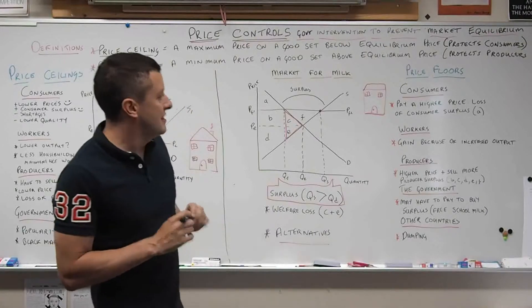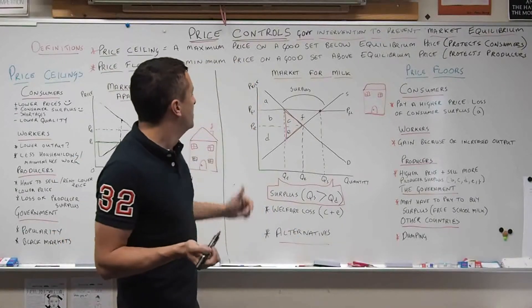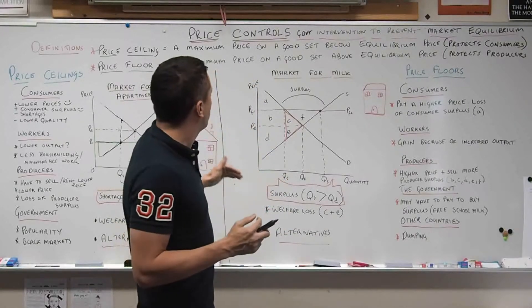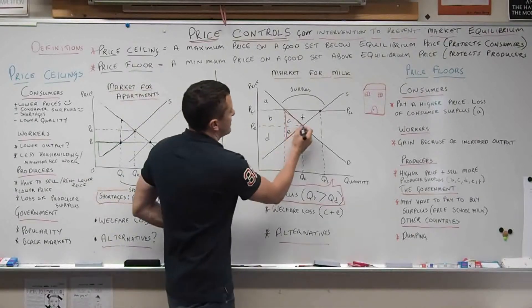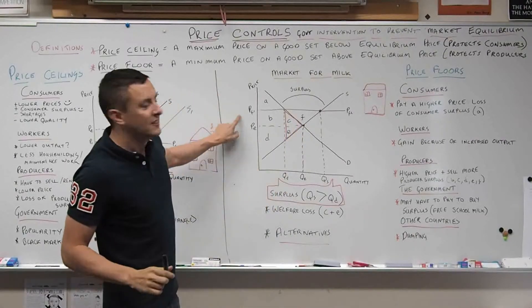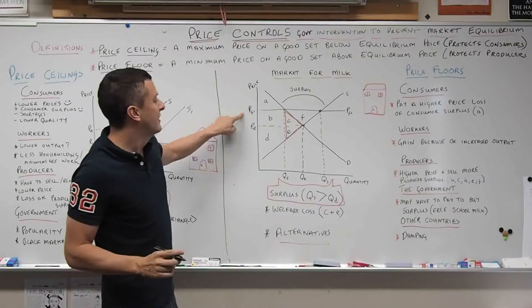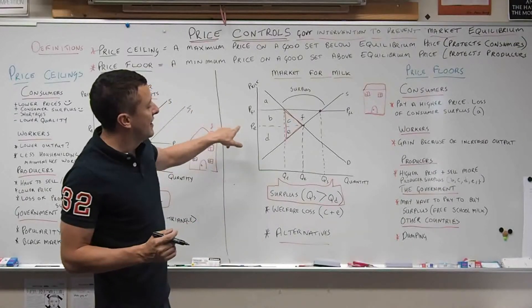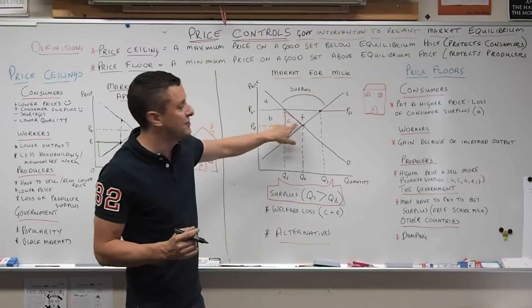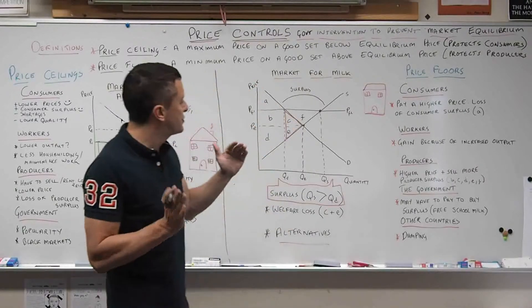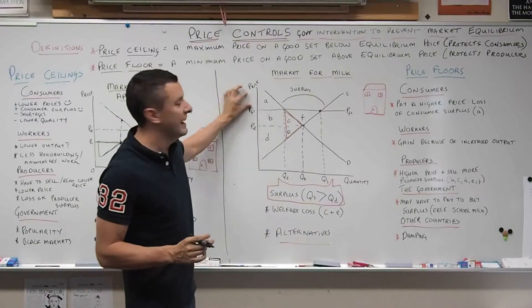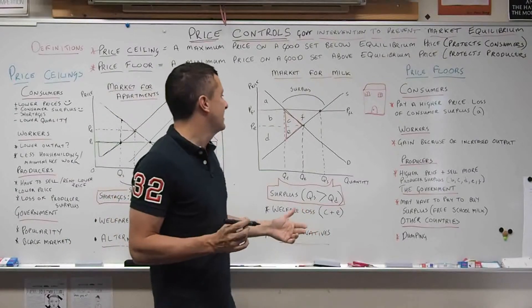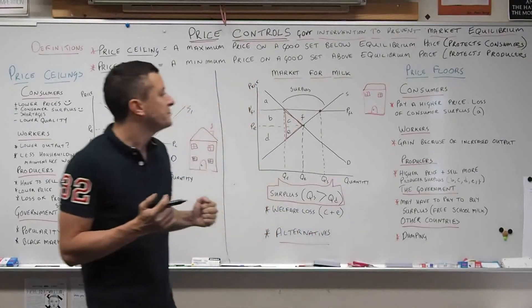So what are the effects on the different groups? Let's think about consumers first. If you put a price floor, the price has increased from PE to PFL. If we think about the consumer surplus, it was ABC in the free market, this triangle here, and it's now shrunk to just A. That means consumers will be worse off. Of course they will be - the prices are higher.